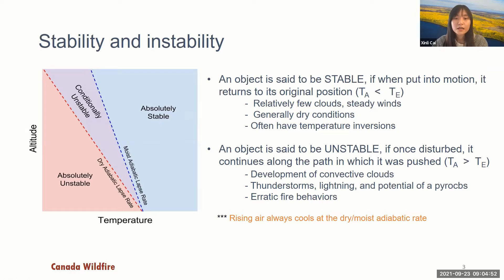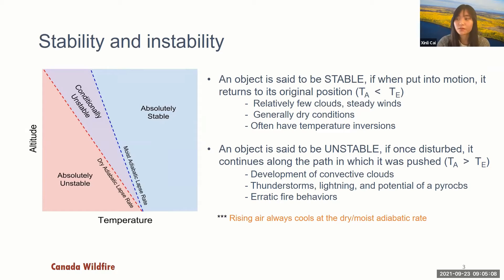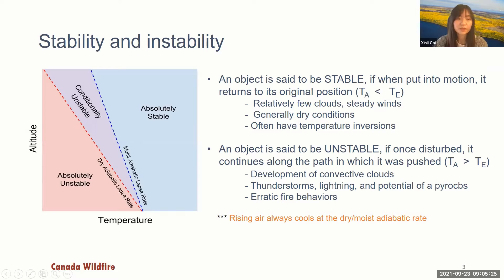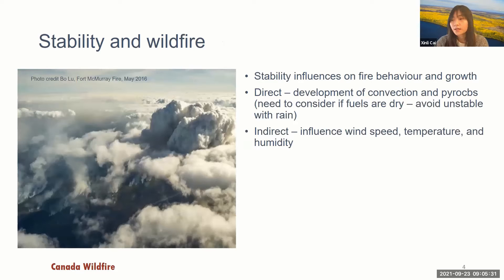In a stable atmosphere, the air parcel temperature is lower than the environmental temperature, which leads to relatively flat clouds, steady winds, generally dry conditions, and often temperature inversions. On the other hand, an object is said to be unstable when, once disturbed, it continues to move. This leads to the development of convective clouds, sometimes thunderstorms and lightning, and the potential for pyro-CBs and erratic fire behavior.